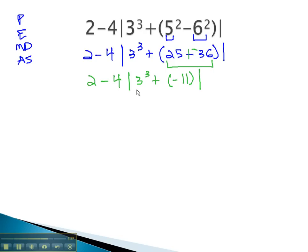We're still working inside that absolute value. Next, we're going to do the exponents after the parentheses. 2 minus 4, absolute value of 3 cubed, that's 3 times 3 times 3, which is 27, plus negative 11.